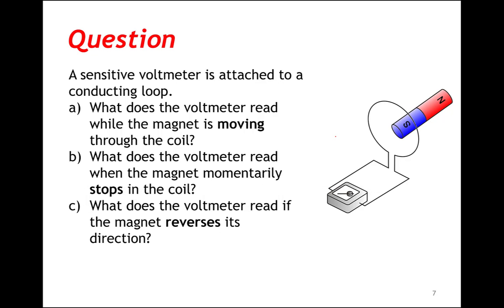Suppose we have a sensitive voltmeter that's attached to a conducting loop. We want to know what the voltmeter reads while the magnet is moving through this loop. Then let's look at what the voltmeter reads when the magnet momentarily stops in the loop, and observe what it reads when the magnet reverses its direction.